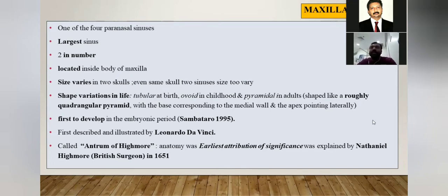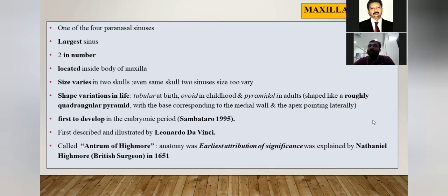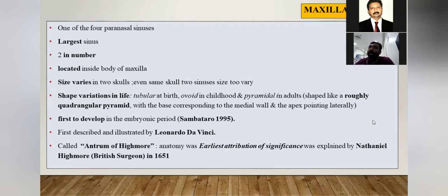The exact location of the maxillary sinus is inside the body of the maxilla, and the size and shape varies between individuals and skulls. At birth, the maxillary sinus has a tubular shape; in childhood it acquires an ovoid shape; and in adulthood it acquires its peculiar roughly quadrangular pyramidal shape — four angles and four faces. This is one of the first sinuses to develop in the embryonic period, first described and illustrated by Leonardo da Vinci, and its anatomical features were explained by Nathaniel Highmore, a British surgeon, in 1651 — hence the name antrum of Highmore.